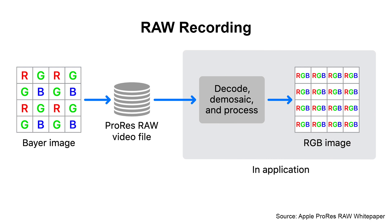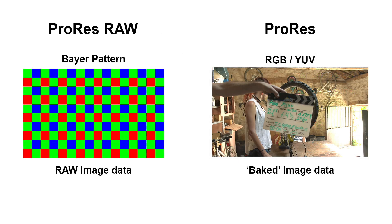This applies to any RAW file, actually. The big advantage of this is that the de-bayering and processing algorithms are not tied to the hardware, but can be improved over time and yield higher quality images from the same raw material. So at the end of the day, what's the difference between a normal ProRes file and a ProRes RAW file? A conventional ProRes file stores the processed or baked image data, whereas a ProRes RAW file stores the unprocessed Bayer pattern — which makes it a true RAW format.